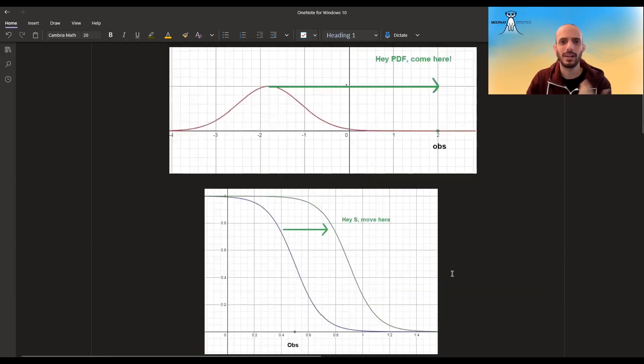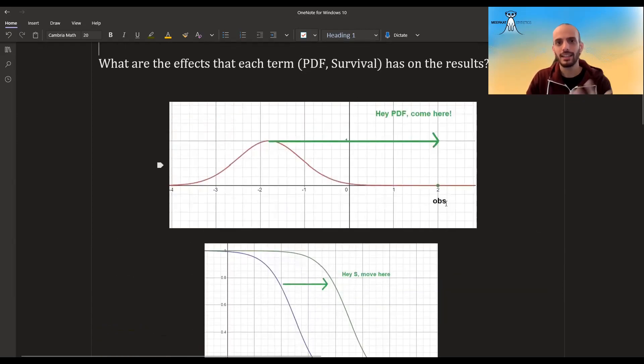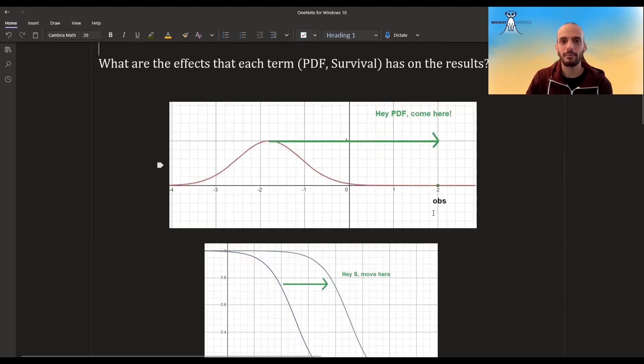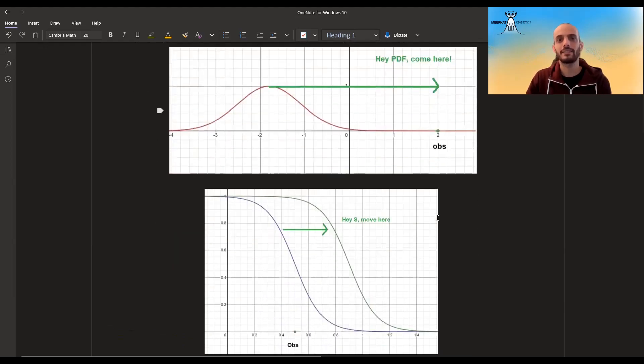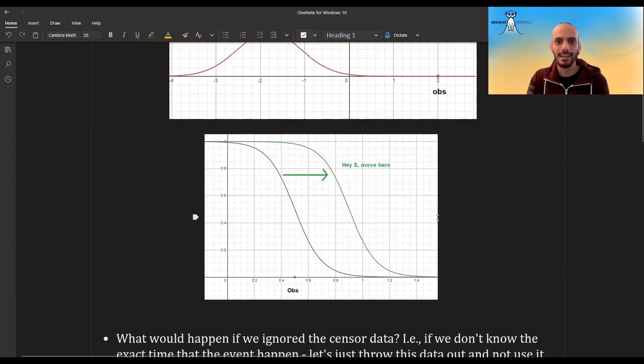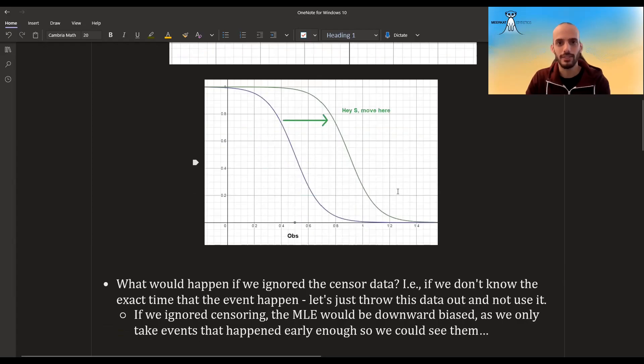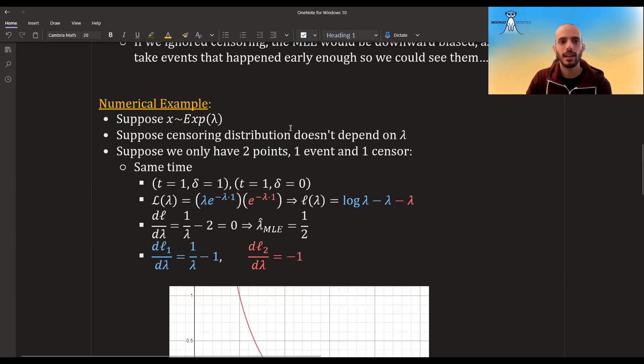They would be downward biased because we are basically ignoring anyone who survived long enough and then disappeared, and we just look at the people that had the events in the time that we conducted the research. So ignoring censoring is bad. You will get biased estimators. You have to use the censored data that you have. Another question you might ask is, why do survival analysis at all? Let's just do logistic regression. Did the event happen or not? But with certain events like death, eventually everyone will die. So you do want to keep that information of time.